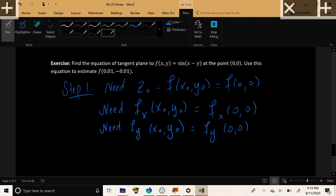So z naught, which comes from plugging 0, 0 into the original function, seems like the easiest one to get so far, because it doesn't require any derivatives. So let's calculate sine of 0 minus 0. Sine of 0 is 0 again. So we get sine of 0.